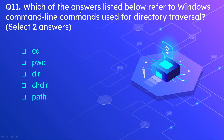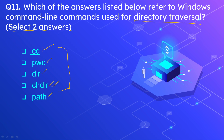Question number eleven: which of the answers listed below refer to Windows command line commands used for directory traversal? Select two answers. The options are CD, PWD (Present Working Directory), DIR (Directory), CHDIR (Change Directory), or Path. The correct answers are CD and CHDIR — both stand for Change Directory or directory traversal.